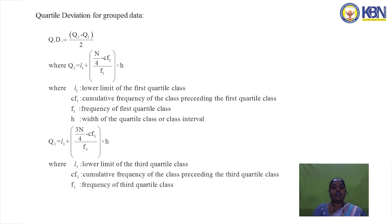For grouped data, the quartile deviation formula is (Q3 − Q1) / 2, where Q1 = L1 + [(n/4 − CF1) / F1] × H. Here L1 is the lower limit of the first quartile class, CF1 is the cumulative frequency preceding it, F1 is its frequency, and H is the class width. Q3 = L3 + [(3n/4 − CF3) / F3] × H, where L3 is the lower limit of the third quartile class, CF3 is its preceding cumulative frequency, and F3 is its frequency.